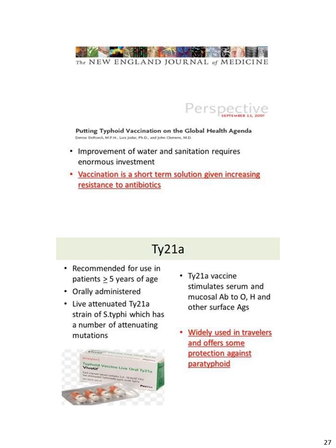The typhoid vaccine is a short-term solution given the increasing resistance to antibiotics. The recommended vaccine is the Ty21a vaccine, which stimulates serum and mucosal antibodies to O, H, and other surface antigens. It is typically used in trivalent form and offers protection against paratyphoid as well.